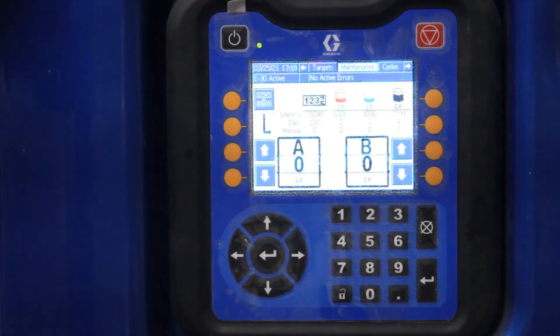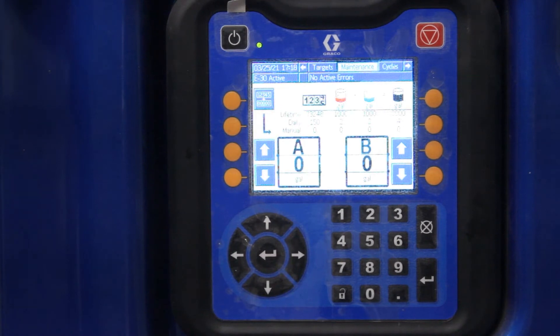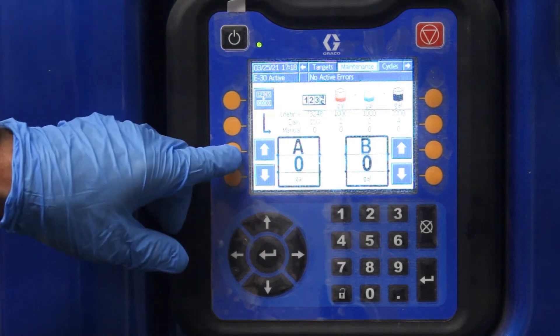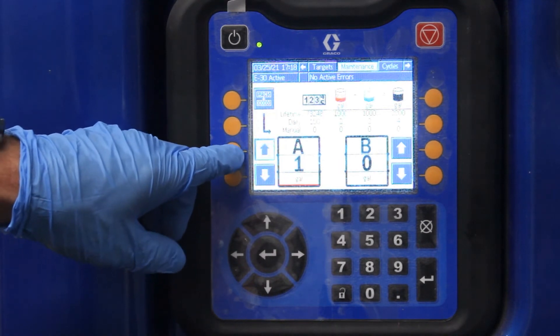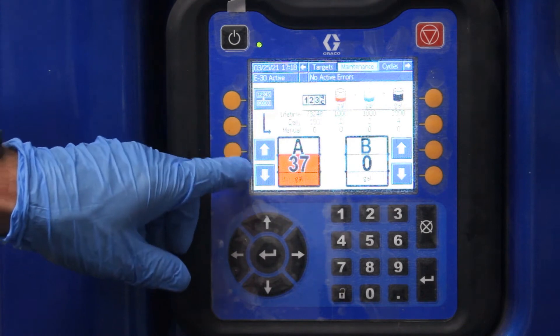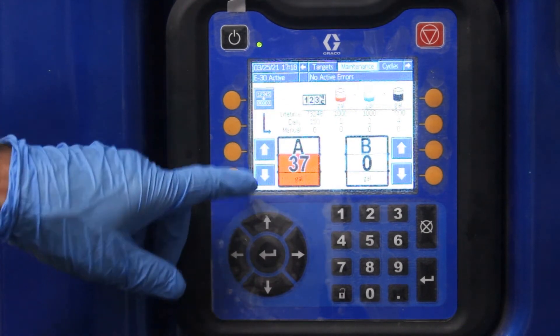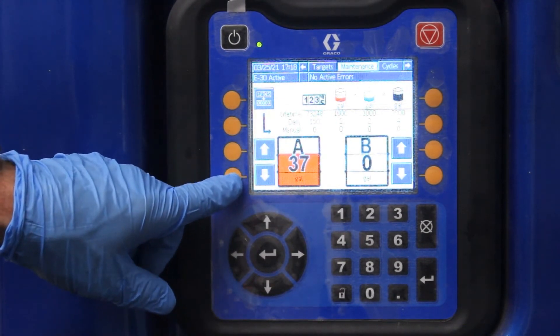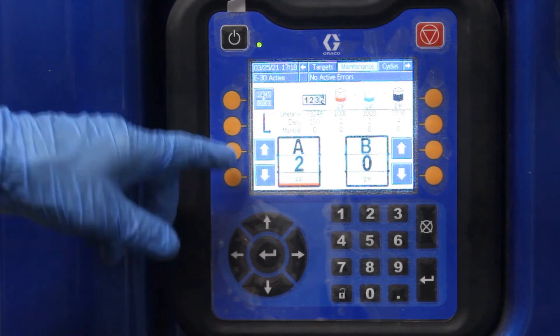This right here shows you your actual liquid in the machine or chemical you have. Normally, if they're spraying a full set, they'll just set it to 47 or 48 gallons. So you just raise it up, set it. The machine's usually set to shut off at five gallons.